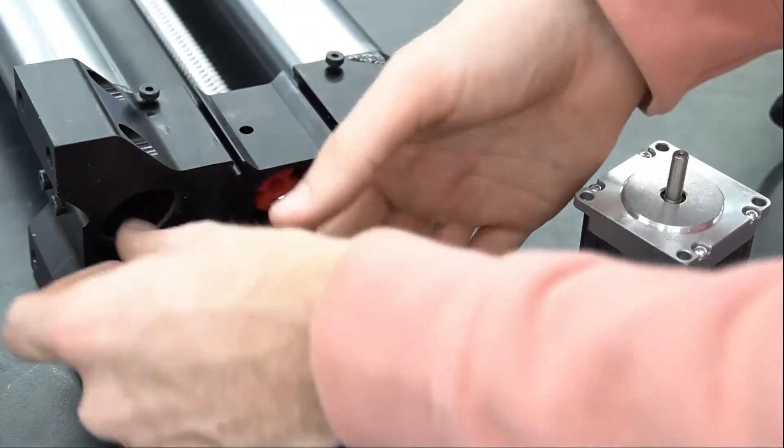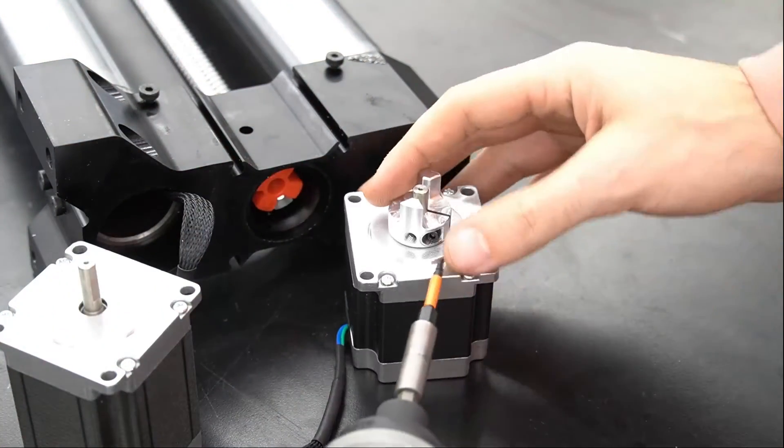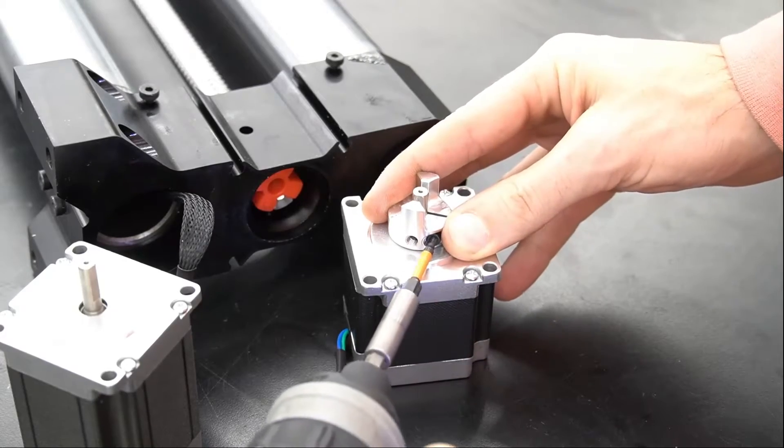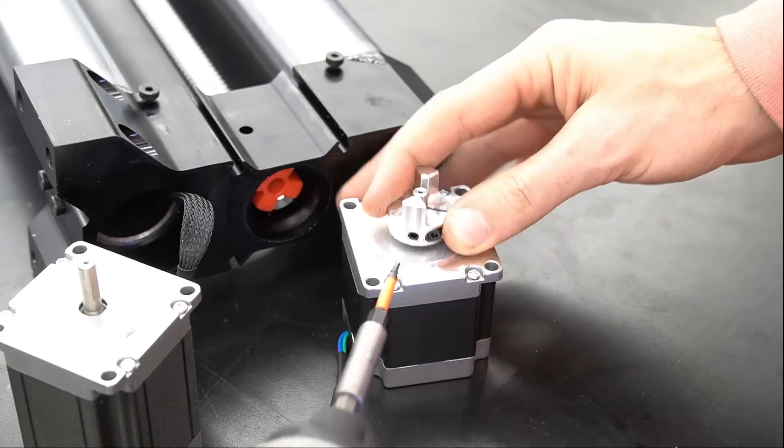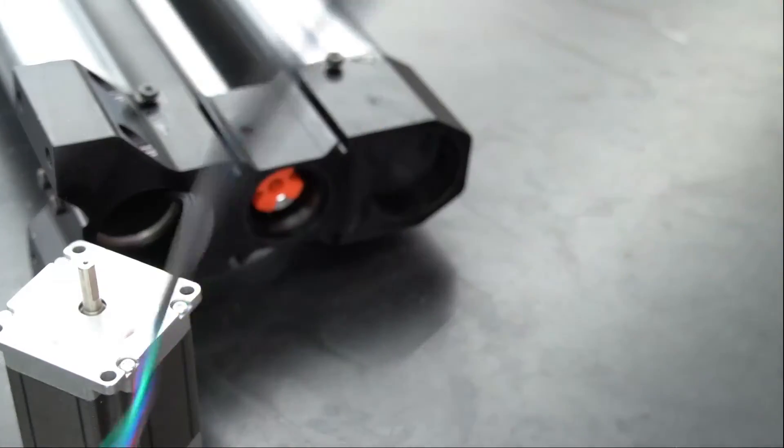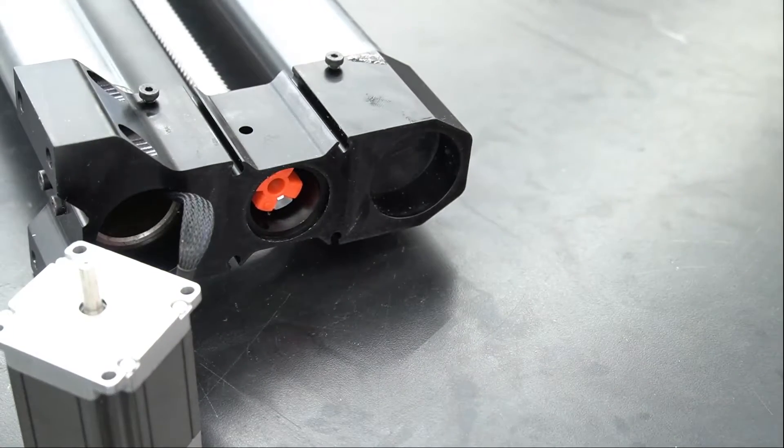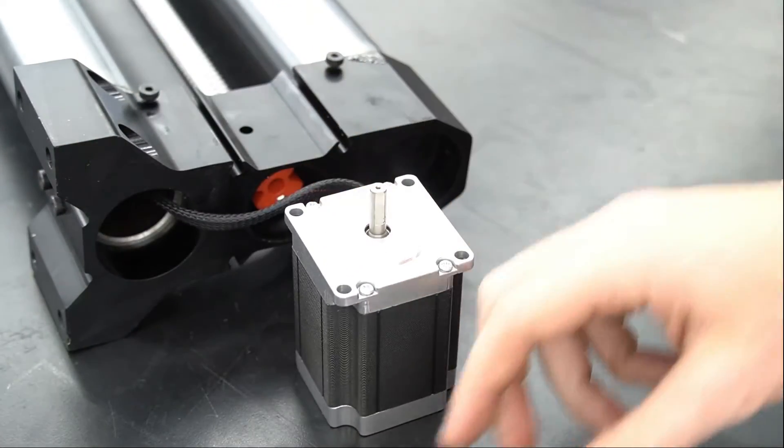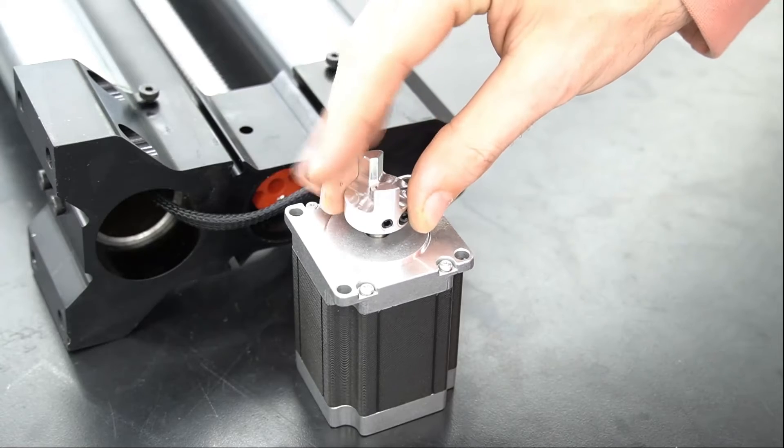Once that's connected, we can feed our wire back through the tubing and remove our coupler from our old motor using a two and a half millimeter hex key. Once removed, we can place the old coupler on the new motor, making sure that we put the set screw on the flat portion of the motor shaft.